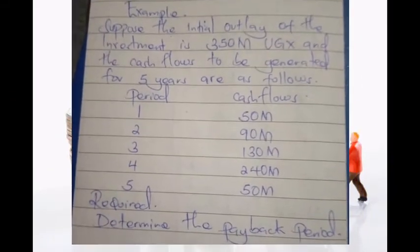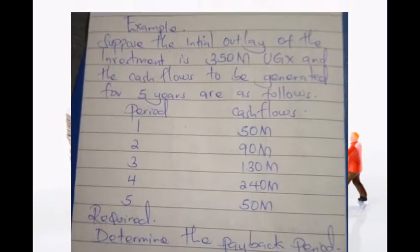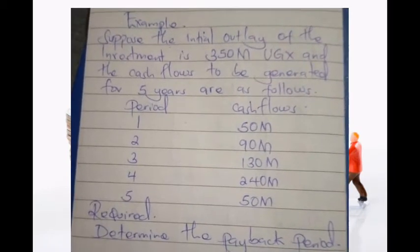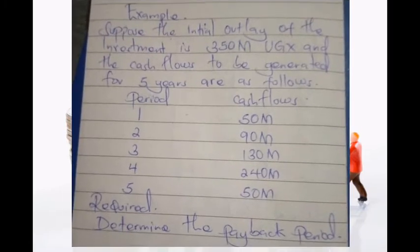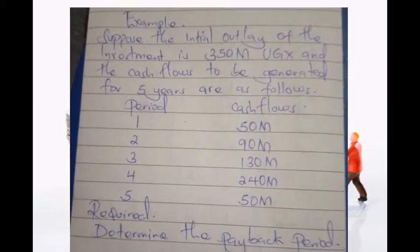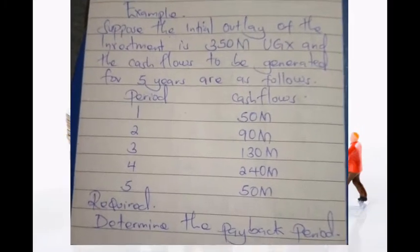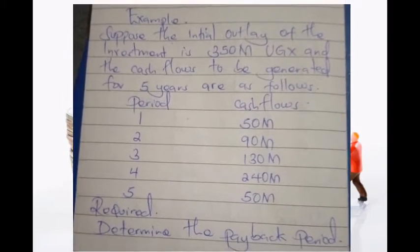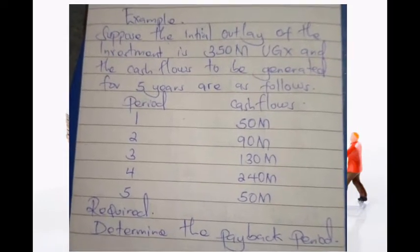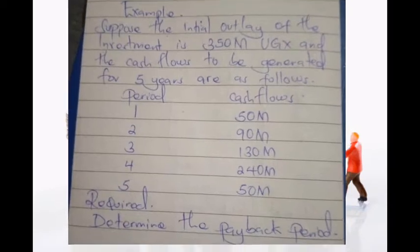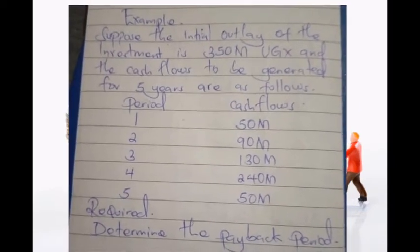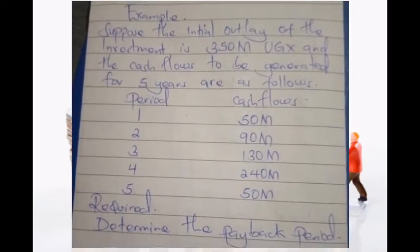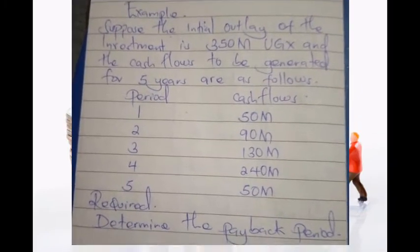Let's have an example about payback period for non-uniform cash flows. Suppose the initial outlay of an investment is 350 million Uganda shillings and the cash flows generated for five years are as follows: Year 1 — 50 million; Year 2 — 90 million; Year 3 — 130 million; Year 4 — 240 million; Year 5 — 50 million. As we can see, the cash flows differ each year, so these are uneven, non-uniform cash flows.